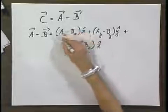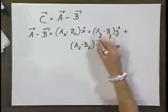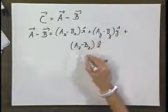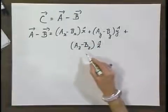So this is the x component of vector C, this is the y component, and this is the z component of vector C.